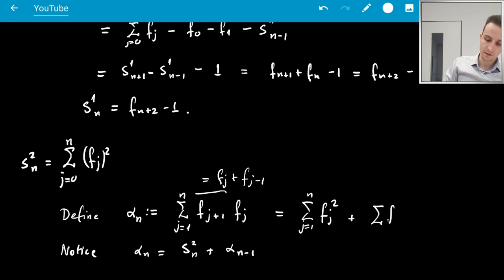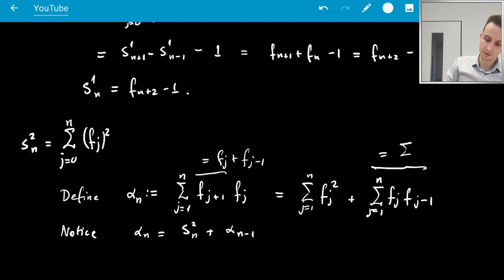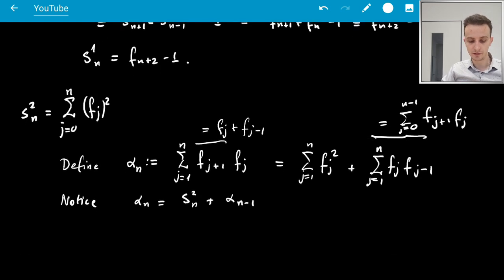And then we get the sum, and I'll just exchange the order, because, of course, they commute. j goes from 1 to n, and now we can switch the index to see that this is alpha_n-1. We can update the index. So, this is equal to the sum of j goes from 0 to n minus 1 of F_j times F_j+1. And then you just change it back to 1, because the first term is 0.